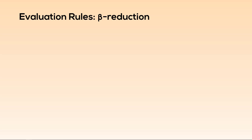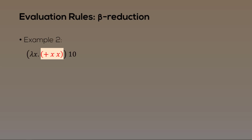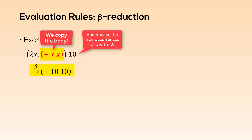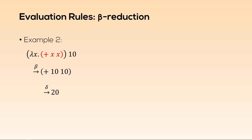Now let's do a few more beta reductions. In example 2, the first step in the beta reduction is to consider the lambda abstraction's body. We can see that both occurrences of the variable x occur free within the body, because there is no lambda x within the body to bind it. We perform the beta reduction by copying the body and replacing all free occurrences of the formal parameter x with the argument 10, then use a delta rule to reduce this expression to 20.